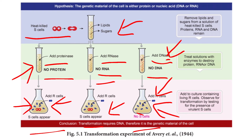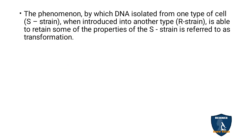In conclusion, DNA is the genetic material of all living organisms, except some viruses. The phenomenon by which DNA isolated from one type of cell — the S strain — when introduced into another type, the R strain, enables it to retain some properties of the S strain is called DNA transformation.